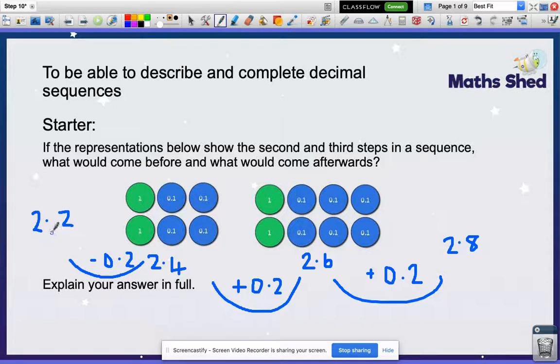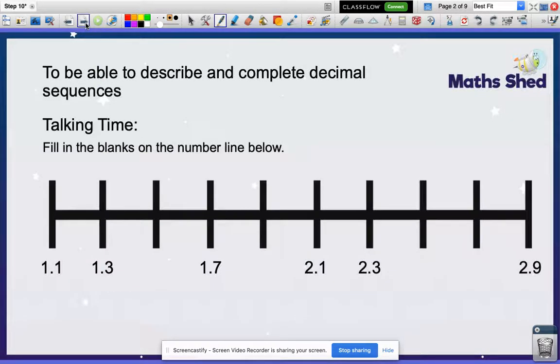So now I have a sequence: 2.2, 2.4, 2.6, and 2.8. You can see that going up 0.2 each time. So here you have a number line that also shows a sequence, and it asks us to fill in the blanks. 1.1, 1.3. What would come next?